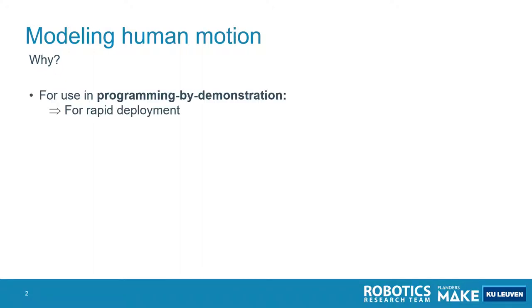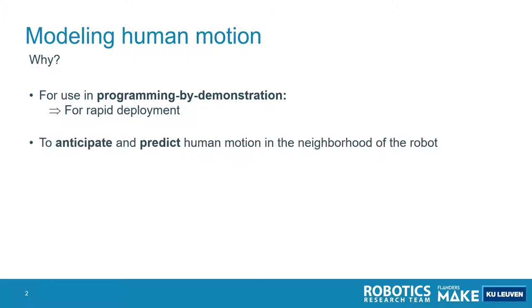On one hand, we want to use it for programming by demonstration, such that we can rapidly deploy our more generic applications at a specific site. On the other hand, we also want to use these human motions to anticipate and predict human motions in the neighborhood of the robot — for example, to avoid the human, or for example, in a handover between the human and the robot.